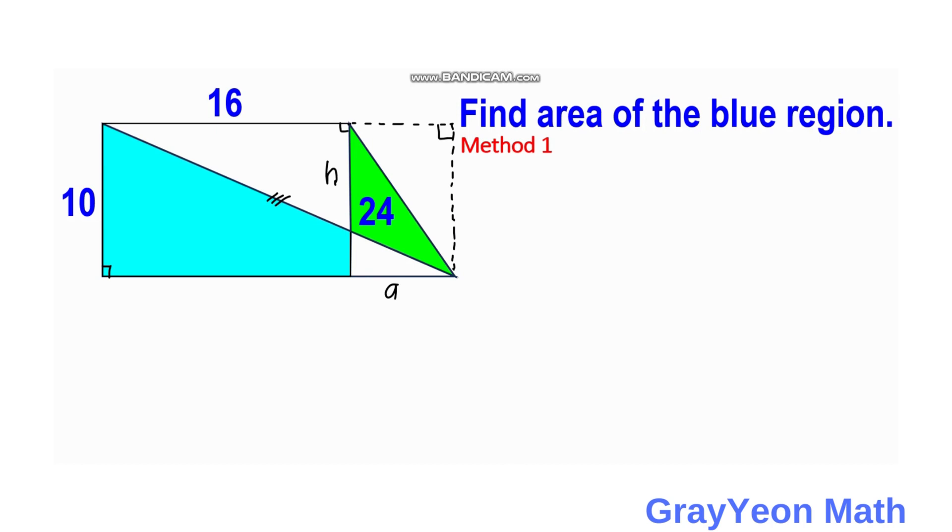And with that, we can say that one half times 16 times H, for the upper right triangle, plus 24, plus one half times A times 10...